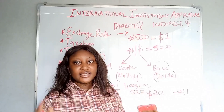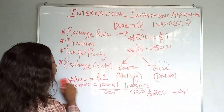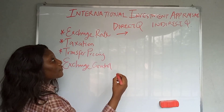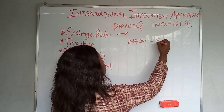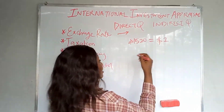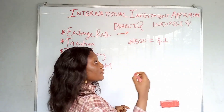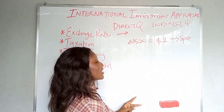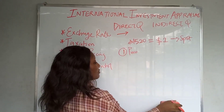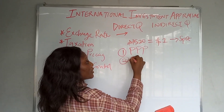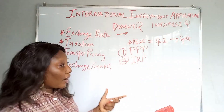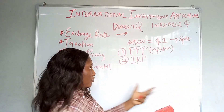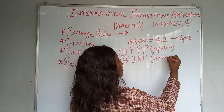Under exchange rates is prediction of exchange rates. If today's spot rate is 520 naira to one dollar, and you want to know the forward rate — the rate in a year or two years — you can use two methods: PPP (Purchasing Power Parity), which focuses on the inflation rates of the two countries involved, or IRP (Interest Rate Parity), which focuses on the interest rates of the two countries.